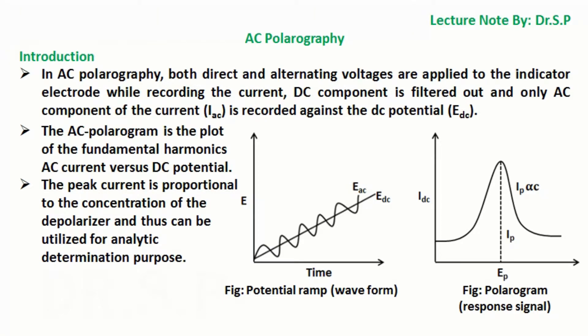In this tutorial we will discuss AC polarography. In AC polarography, both direct and alternating voltages are applied to the indicator electrode while recording the current. The DC component is filtered out and only the AC component of the current (I_AC) is recorded against the DC potential (E_DC).